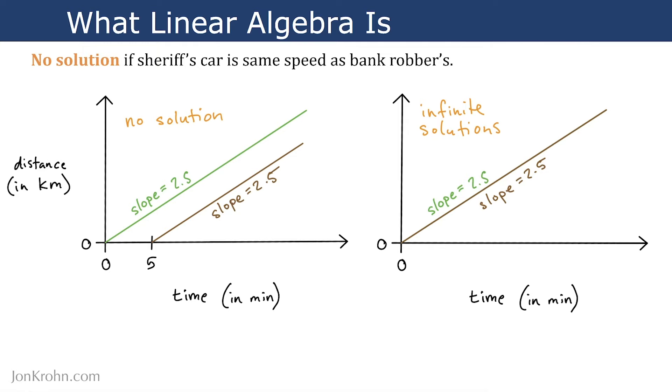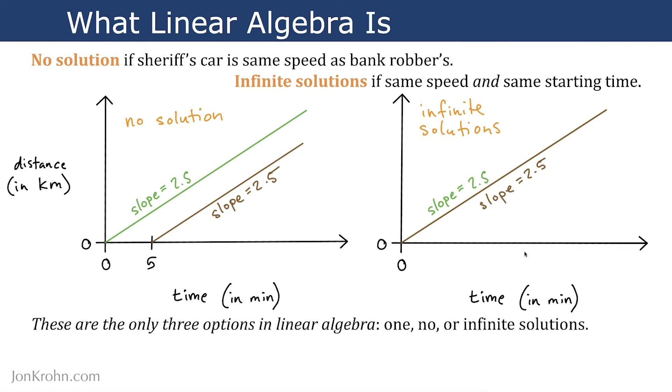However, there would have been no solution if the sheriff's car were the same speed as the bank robbers. So if they both were traveling at exactly the same speed forever, then there would be no solution to this problem. On the other hand, we could also have an infinite number of solutions if both the bank robber and the sheriff were traveling at the same speed and have the exact same starting time. So their slope is the same, their start time is the same now. They overlap at every time point. These are the only three options in linear algebra. So you either have one solution, no solutions, or infinite solutions. It is impossible for the lines to cross multiple times. So this is a key part of this being linear algebra in these systems of equations.